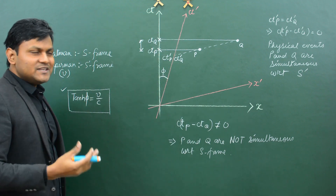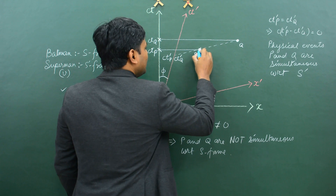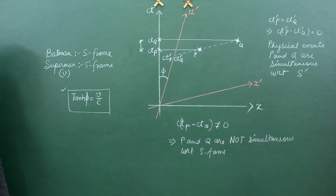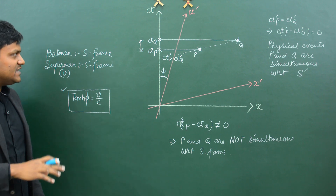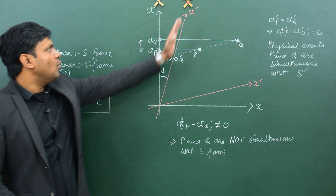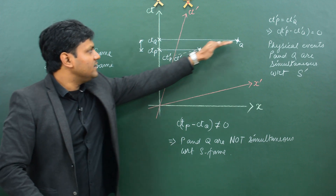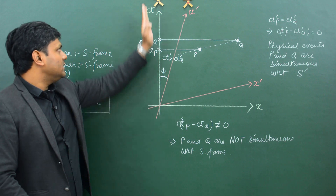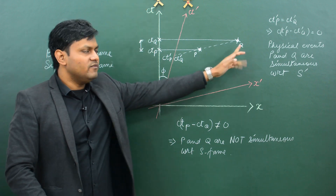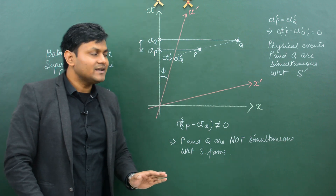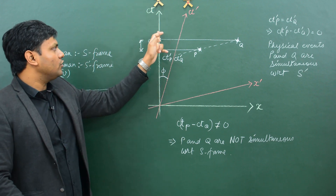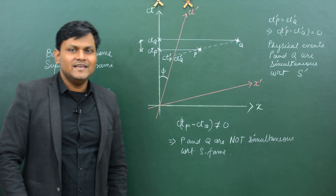I can conclude that P and Q are not simultaneous with respect to the S frame of reference. So even though both events are simultaneous with respect to Superman, they are not simultaneous with respect to Batman. In fact, event P happens first for Batman and event Q happens later on. But from Superman's perspective, events P and Q happen at the same time. This is the relativity of simultaneity — if for one moving observer two events are simultaneous, it does not mean they will also be simultaneous for another inertial observer.